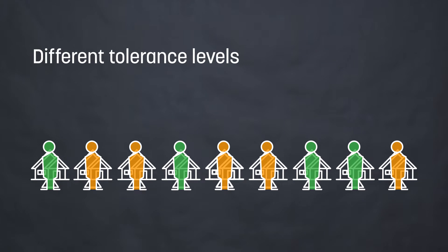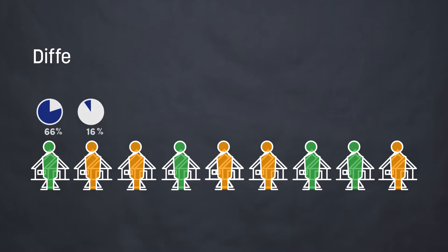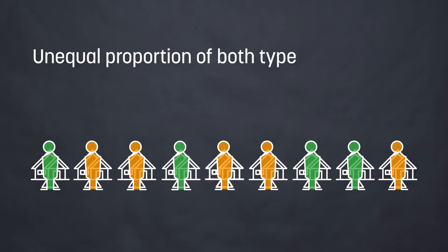We can also modify tolerance levels. It's a wider subject, but for example, it can be lower or higher, so they can be less or more tolerant. For example, green ones can be more tolerant and orange ones can be less tolerant. And definitely, this will influence the dynamics of our process.